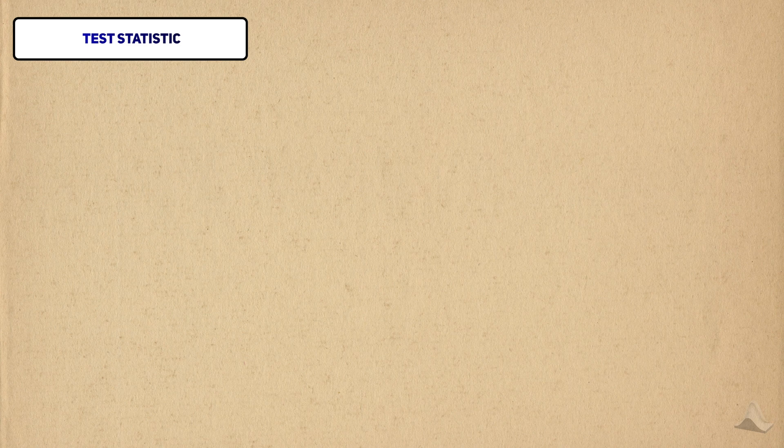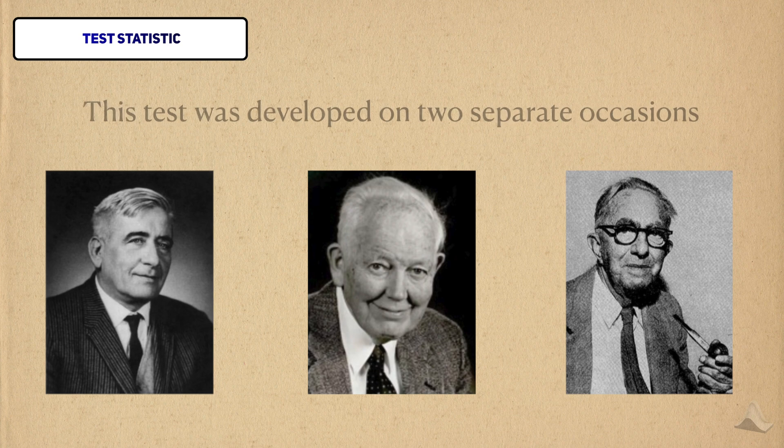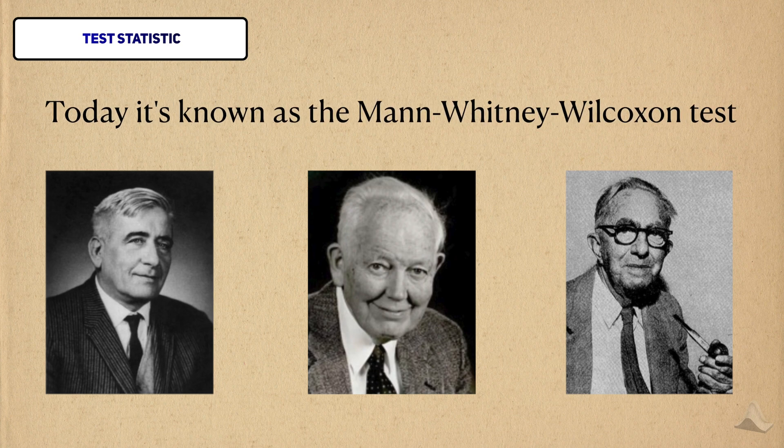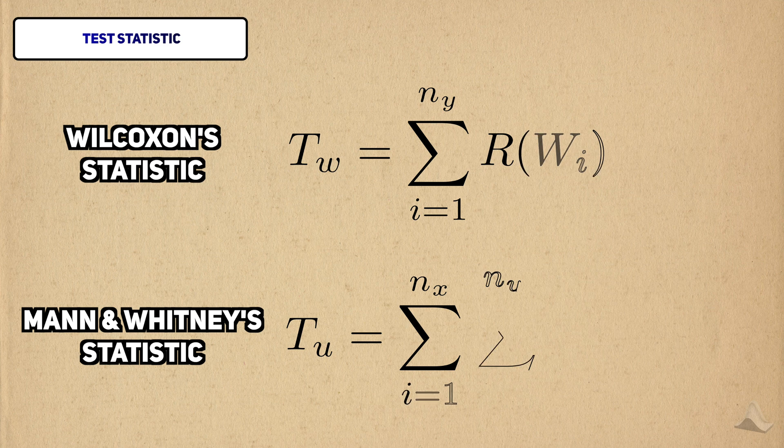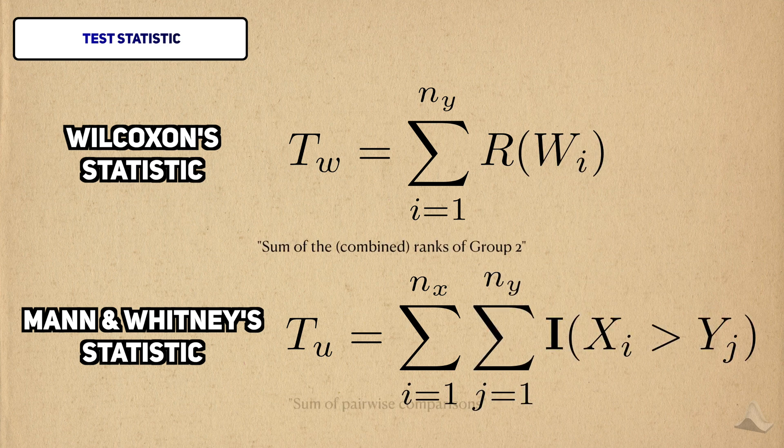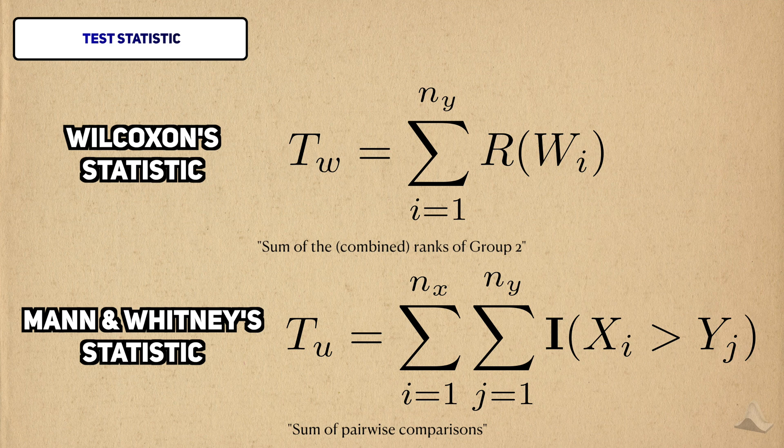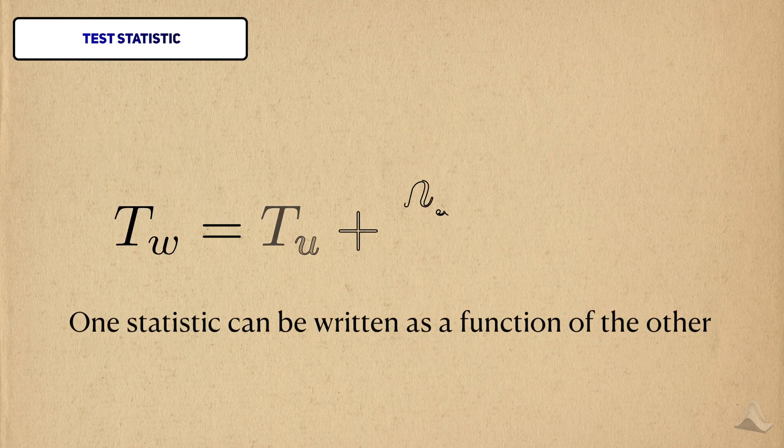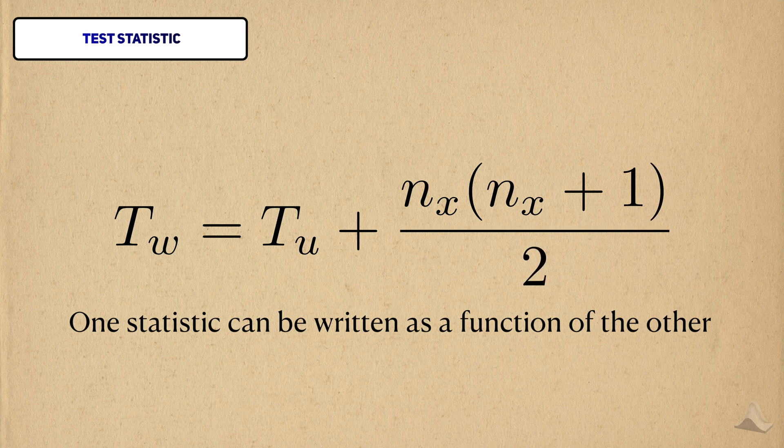Now that we know the null hypothesis, let's move on to the test statistic. Or statistics, actually. Remember that Mann, Whitney, and Wilcoxon proposed this test on two separate occasions. Even though we grouped them together in the same test today, they actually proposed different statistics. Wilcoxon used a sum of ranks for one of the groups in his version, whereas Mann and Whitney use a sum of pairwise comparisons. Even though the two statistics are different, you can derive the value of one statistic directly from the other. This means that they'll give the same conclusions for rejecting the null hypothesis.